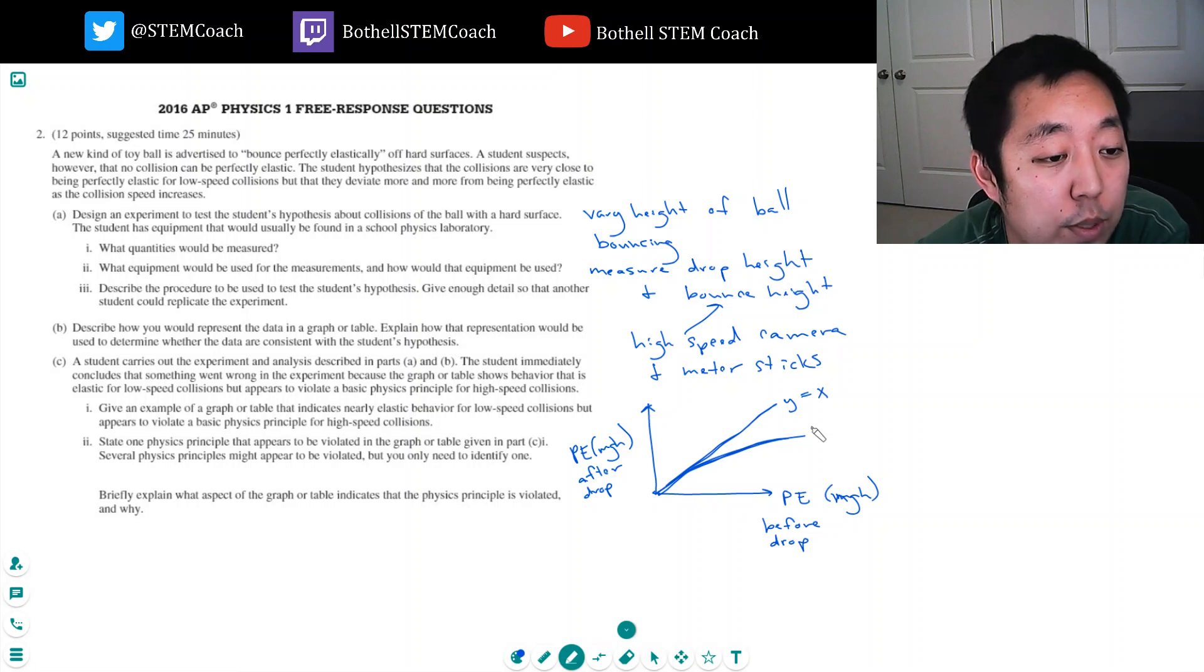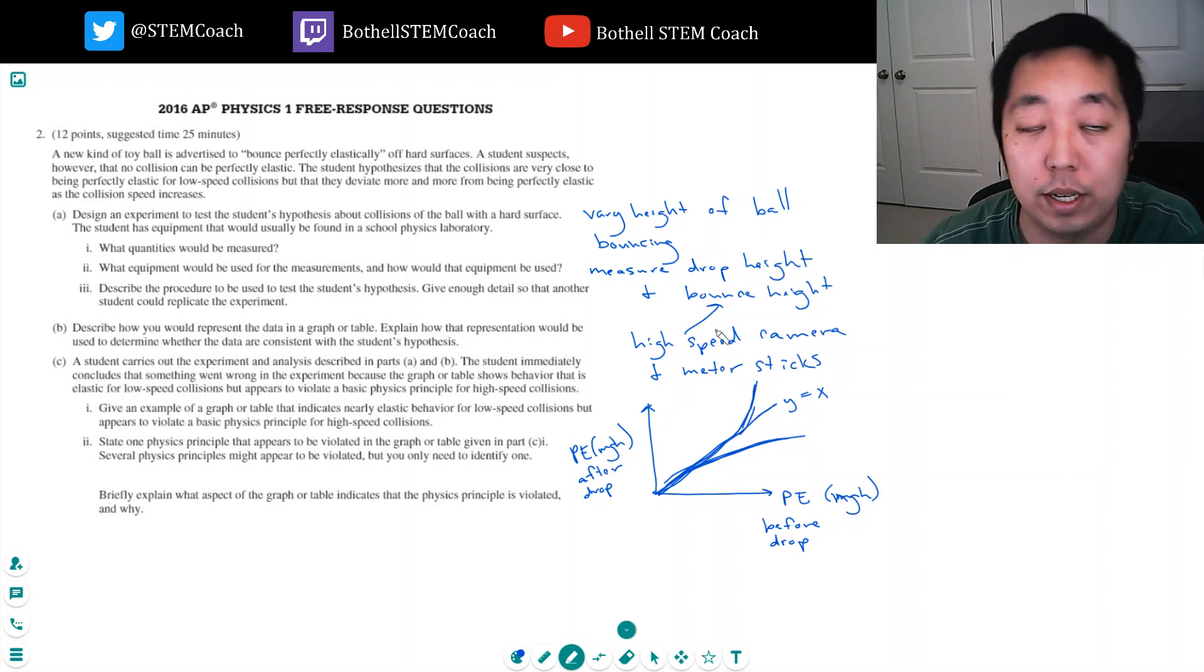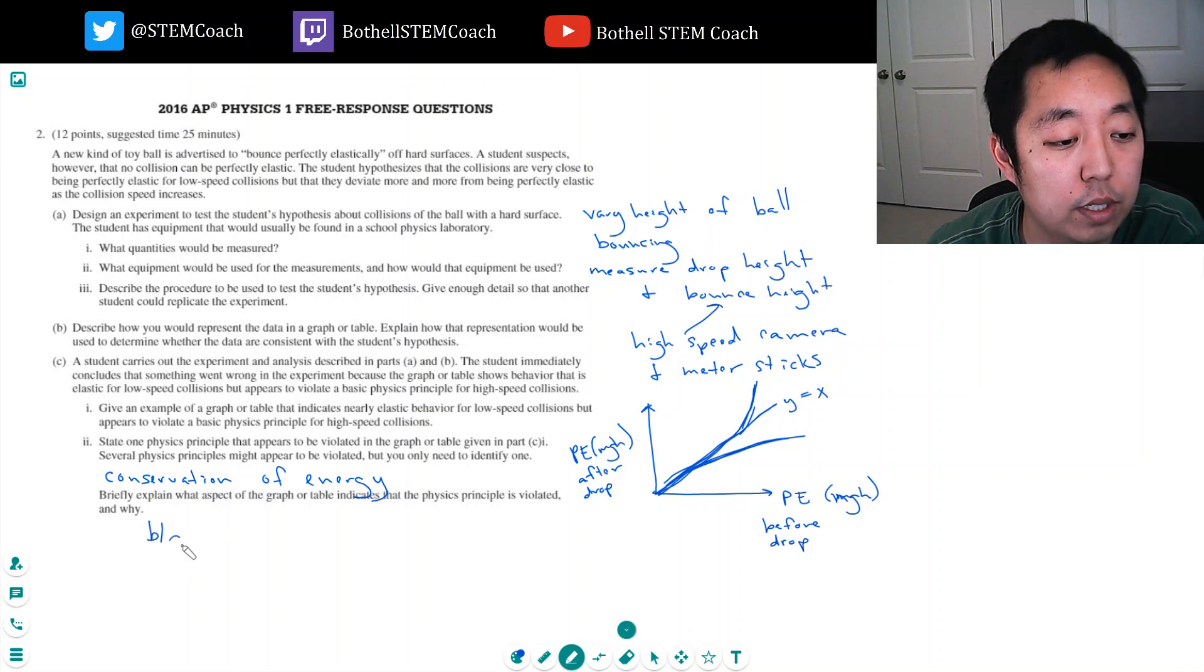Give an example of a graph or table that indicates nearly elastic behavior for low speed collisions but appears to violate. So if the data looked more like this it would be wrong, because this would say that after the drop my energy is higher than before the drop. And so I didn't conserve energy or I gained energy somehow, so this would be conservation of energy would be violated because more energy after collision than before.